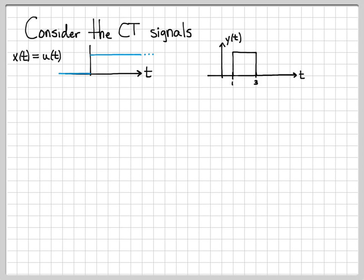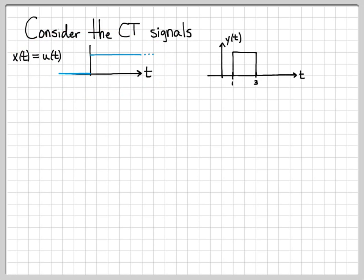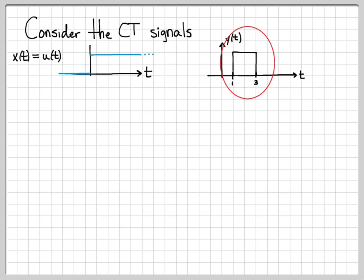So x of t is right here. It is simply a unit step function. It is zero for all time, then at time zero it turns on and is equal to one for all time after that. And then y of t is this pulse signal right here. It is zero for all time, but between times one and three it is equal to one.